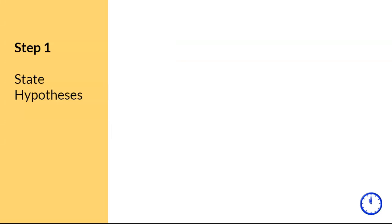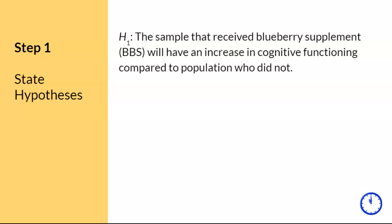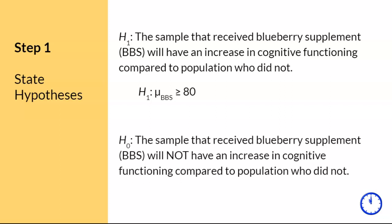Step one. Since we're studying if there is an increase in cognitive function, the directional hypotheses will reflect that wording. Since the treatment in this study was a blueberry supplement, shortened to BBS, the research hypothesis will reflect that there is an increase. In notation, if the sample will have an increase compared to the population, then the sample should be greater than or equal to mu, which is 80. For the null hypothesis, the wording will be the complete opposite — there will not be an increase in cognitive functioning. In notation, we flip the sign, so the sample should be less than or equal to mu, which is 80.